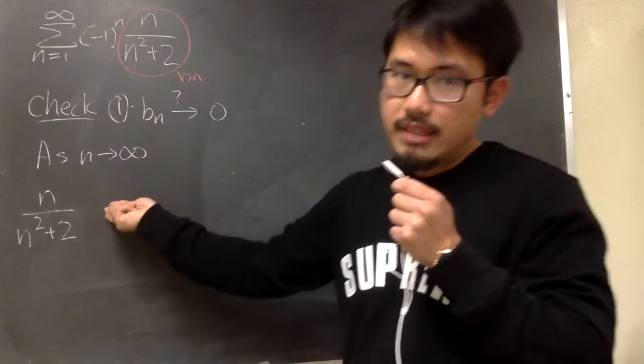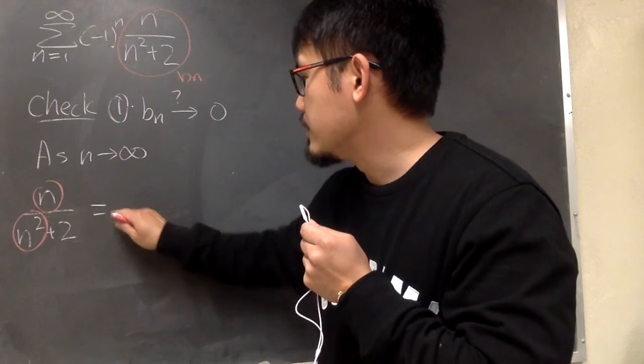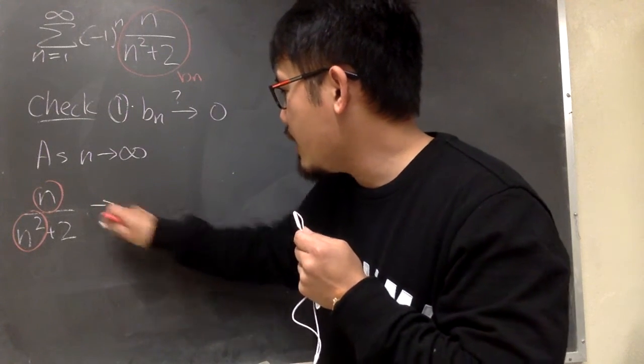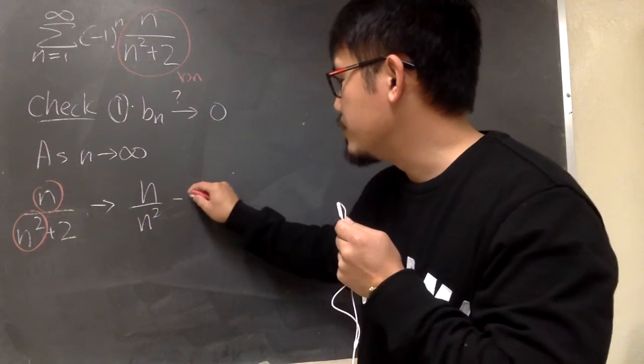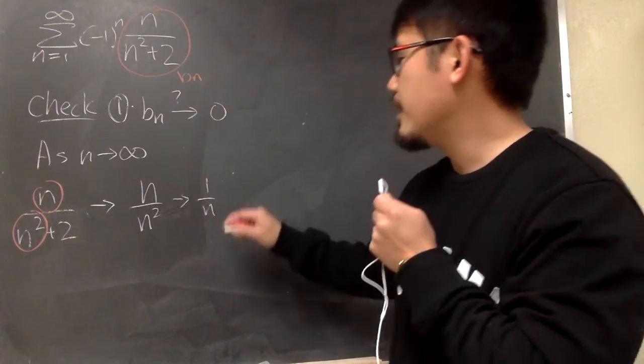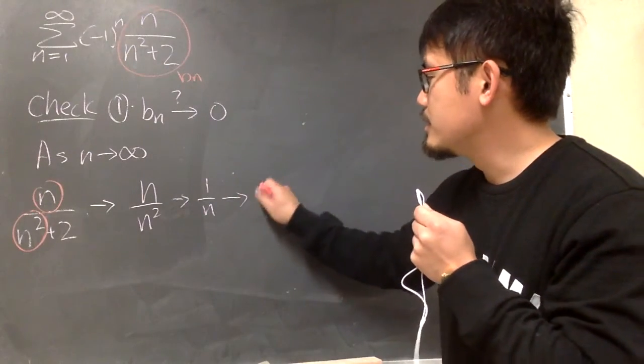And as n goes to infinity, we know we can just care about this over that, so this is approaching to n over n squared, which is approaching to 1 over n. And as n goes to infinity, this is 1 over infinity, which is 0.